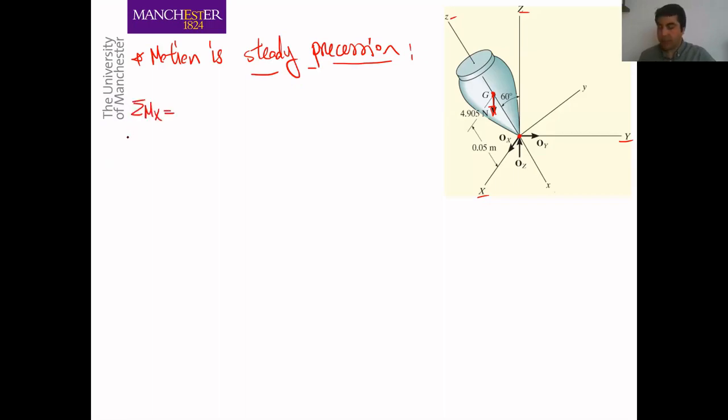We are writing moments around the X axis, which is equal to minus I phi dot squared sine theta cosine theta plus I_Z phi dot sine theta times phi dot cosine theta plus psi dot.